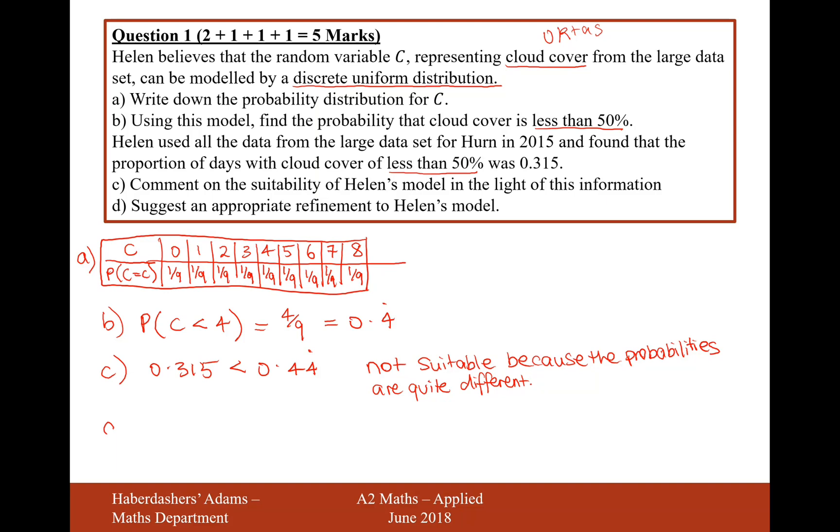So there we are. That's the answer to part C. Moving on to part D, suggest an appropriate refinement to Helen's model. Well, it's just going to be a non-uniform distribution. That's all they suggest you write in the mark scheme. So non-uniform distribution, because the cloud cover will change from month to month. So there we are. That's our answer for part D.